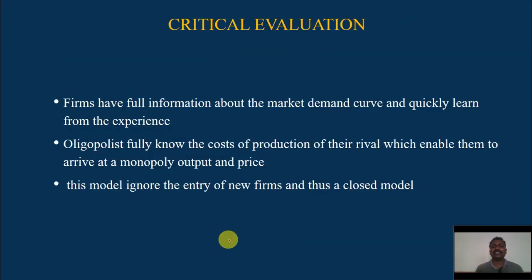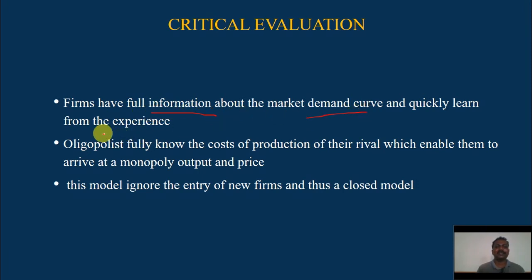Now we will see the criticism part of the theory. This model is quite different from the classical theory of duopoly and oligopoly. Here, firms are assumed to have full information about the market demand and quickly learn from experience. Being duopolists, they learn quickly, adjust, and accordingly fix the monopoly price and output. This assumption is criticized.